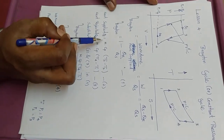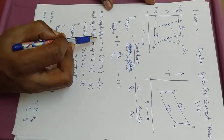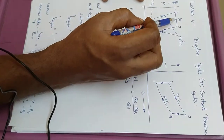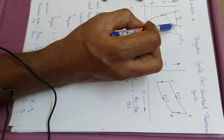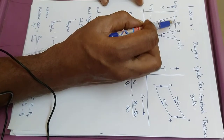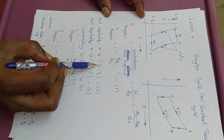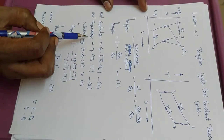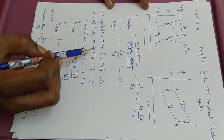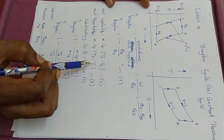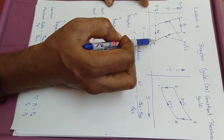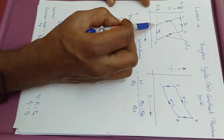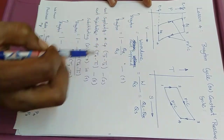Heat supplied QS is m·Cp·(T3 minus T2), because heat addition takes place at constant pressure between the maximum temperature T3 and minimum temperature T2. Similarly, the amount of heat rejected is m·Cp·(T4 minus T1), because the maximum temperature is T4 and minimum temperature is T1, which takes place at constant pressure.